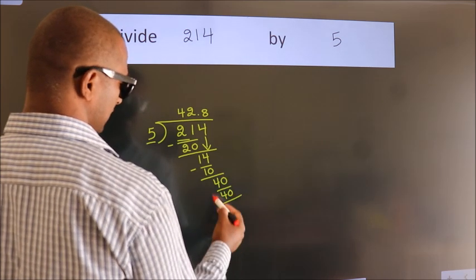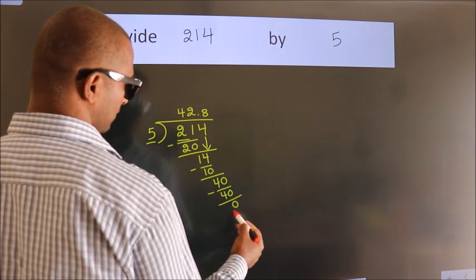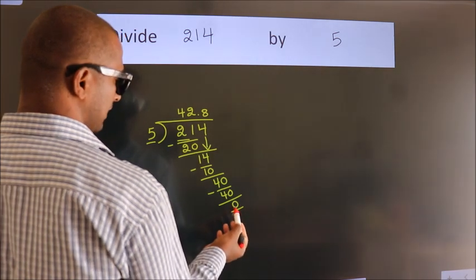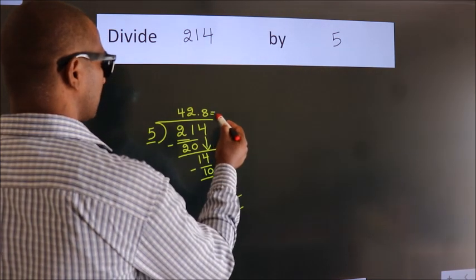Now, we subtract. We get 0. We got remainder 0. So this is our quotient.